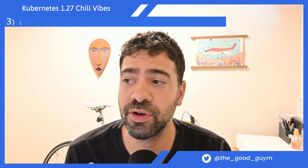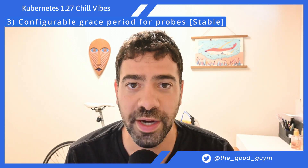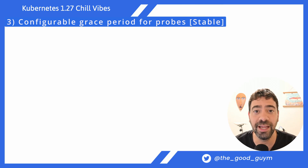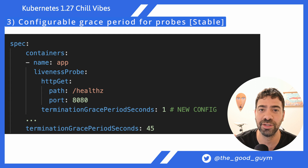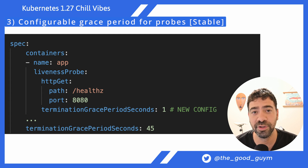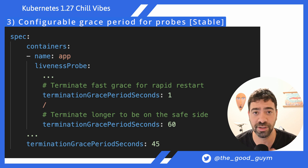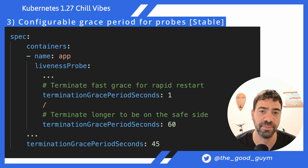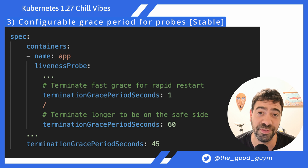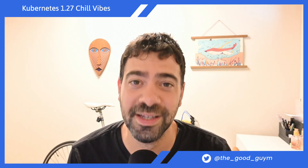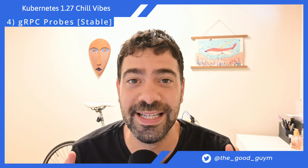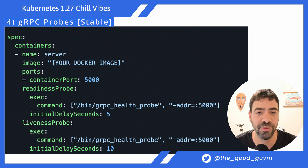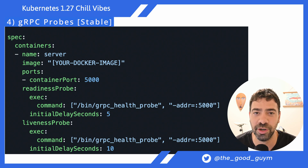The third feature is configurable grace period for probes. During pod termination caused by a liveness probe, it will now follow the grace period defined for the probe itself rather than the default termination grace period for the container. You can make it shorter for faster termination or longer to ensure everything closes properly. Also, gRPC probes are now stable, giving full Kubernetes support to your gRPC services.